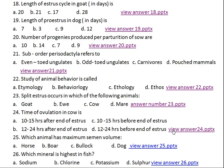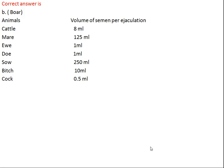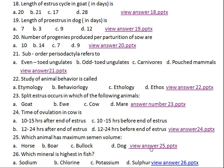Question number twenty-five: which animal has the maximum semen volume? Option A: horse, Option B: boar, Option C: bullock, Option D: dog. The right answer is boar. The boar ejaculates 250 ml. In cattle it is 8 ml, mare 125 ml, ewe and doe 1 ml, sow (boar) 250 ml which is very high, bitch 10 ml, and cock 0.5 to 0.75 ml which is highly concentrated semen.